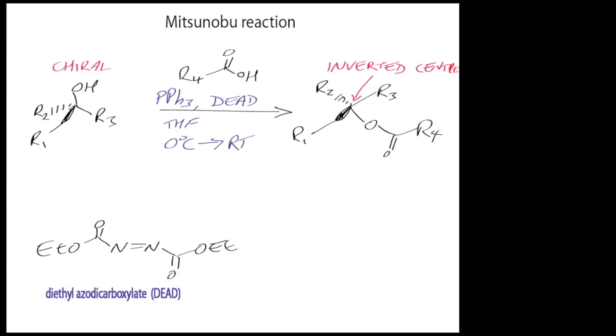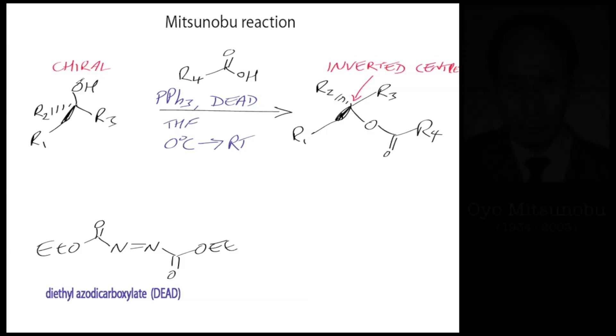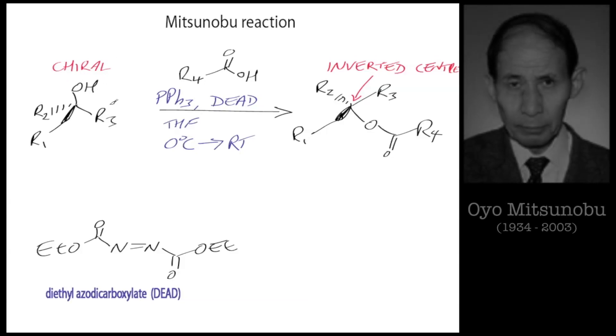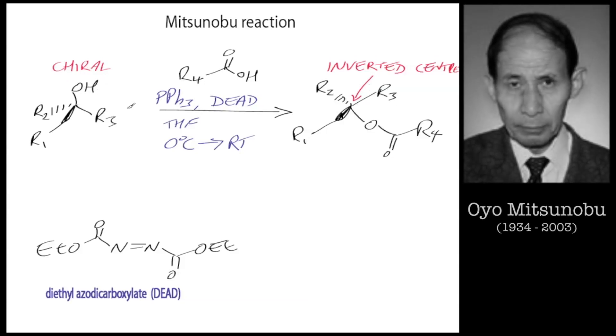Okay, we're just going to go over the Mitsunobu reaction. Here's a scheme for it. Basically we take an alcohol, it doesn't have to be chiral but in this case it illustrates a point, and we react it with triphenylphosphine, a species called DEAD.